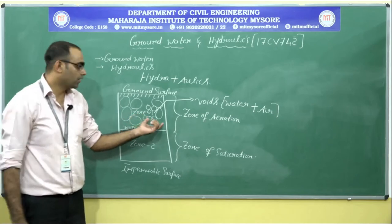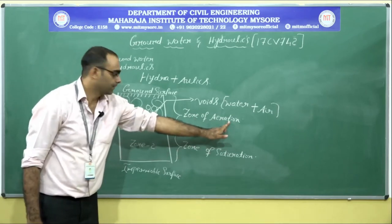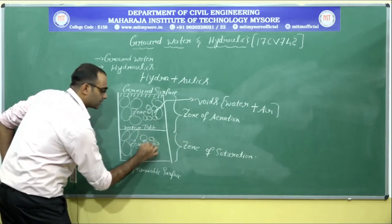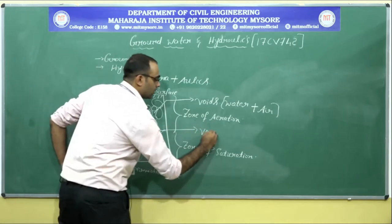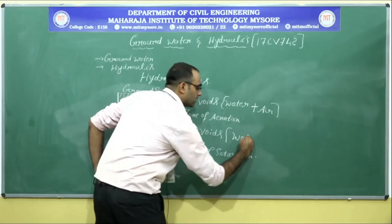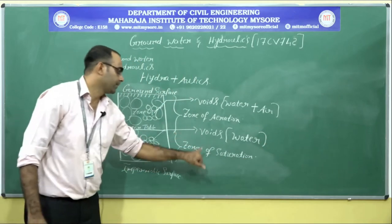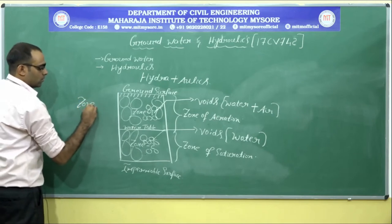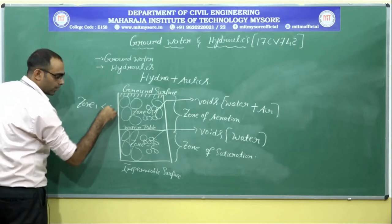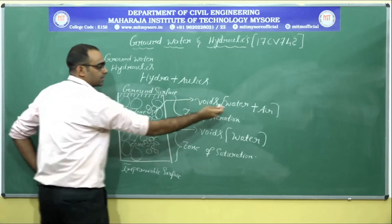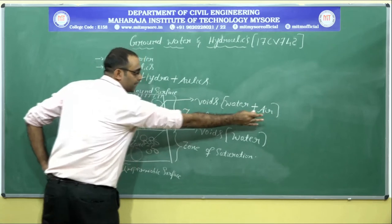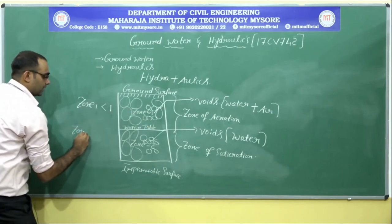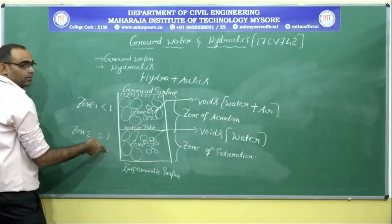That is why Zone 1 is called the zone of aeration. Zone 2 also consists of rocks and tiny soil particles with voids, but those voids are filled only with water — that is why it is called the zone of saturation. The degree of saturation for Zone 1 is less than 1, because voids are filled with little water and more air. For Zone 2, the degree of saturation is equal to 1.